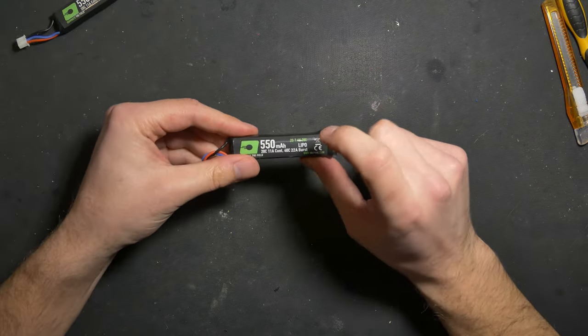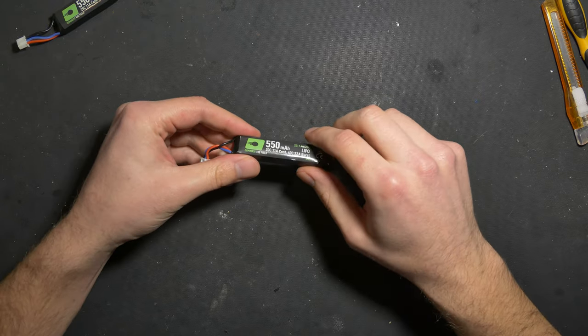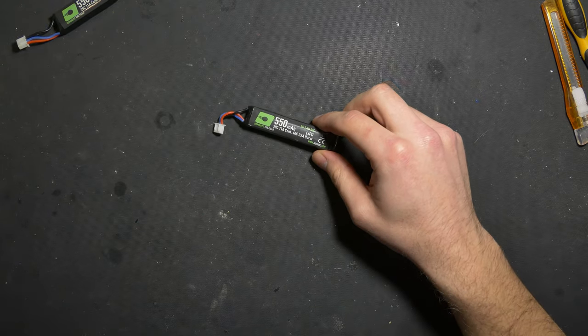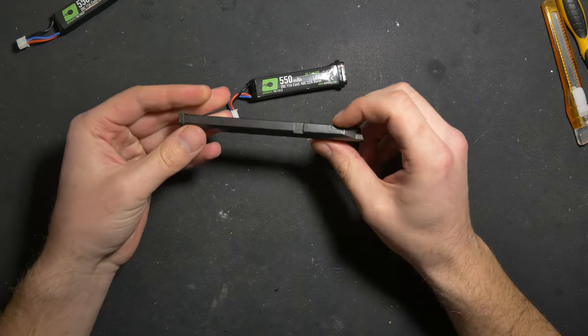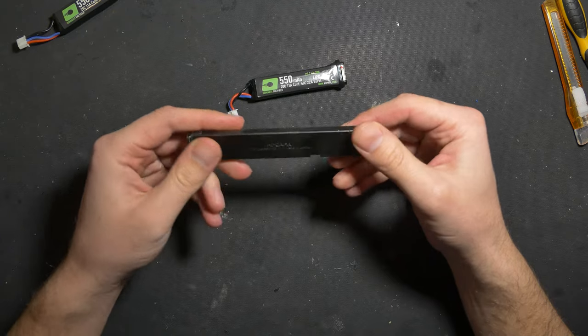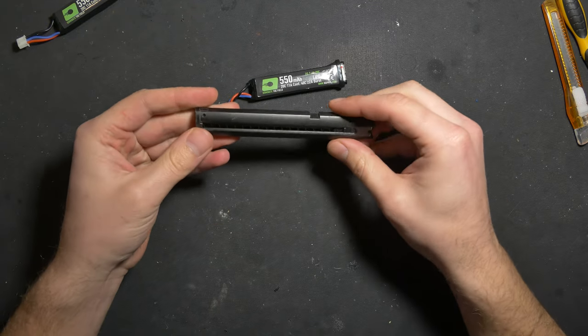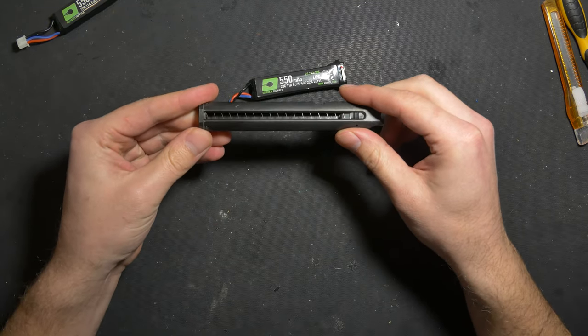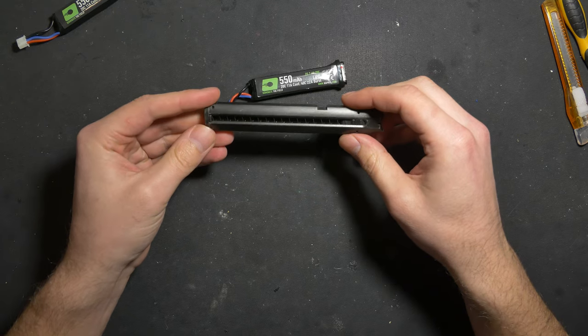The downside of this battery having a higher RPM is that when you are using your standard 29 rounds or 30 rounds magazines, you will have a hard time feeding all the BBs on full auto.